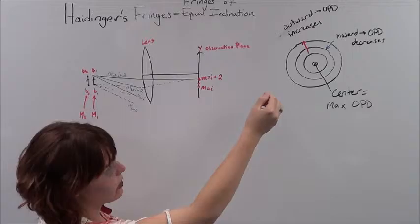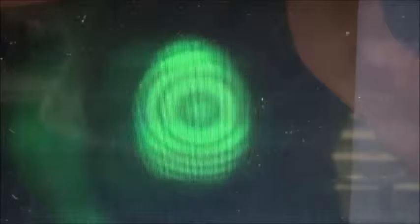So the center of these rings is the maximum optical path difference. So as the fringes collapse inward, the OPD decreases, but as the fringes expand outward, the OPD increases. This is a picture of the Haydinger fringes we created in part A.